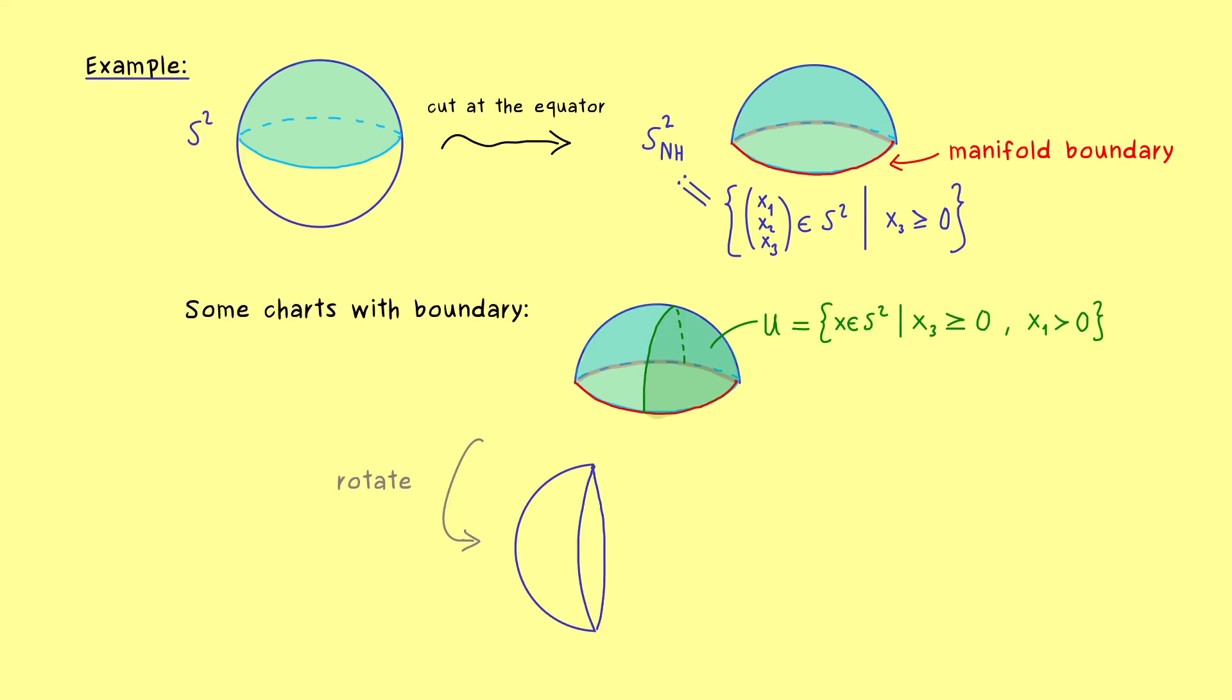Then the part we actually consider is on the top again. And most importantly, our boundary from before is now also only a half circle.